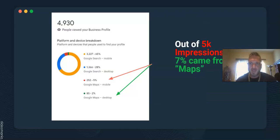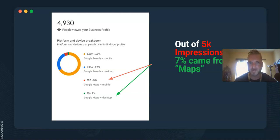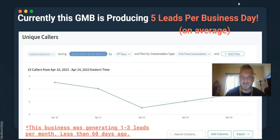Here's a look inside a new listing we recently optimized for Google Search. We didn't really care about Maps — out of 5,000 impressions, only seven percent came from Maps, which was just a little over 300 impressions. That means 73% came from Search. If you look at the analytics breakdown, that is pretty phenomenal.